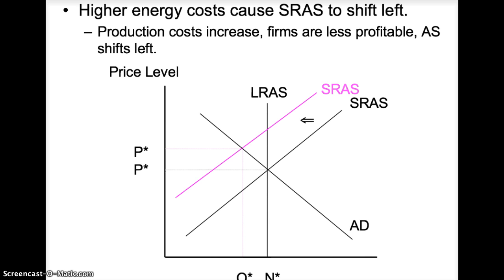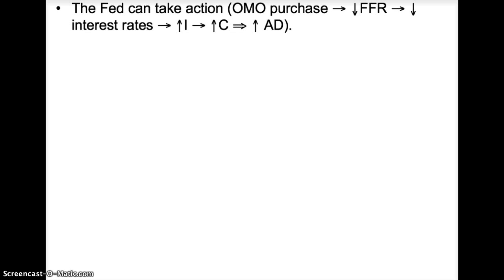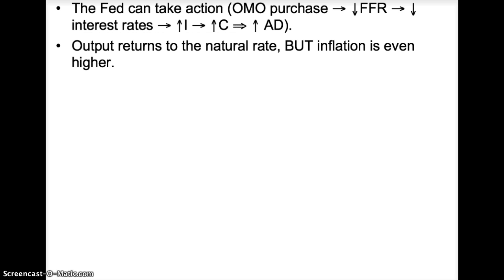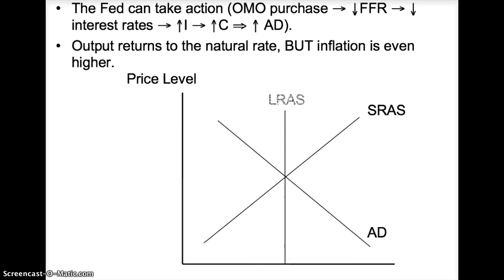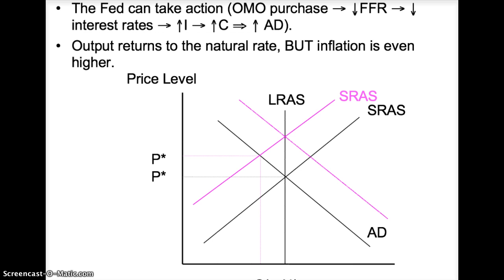The Fed can take action by conducting expansionary monetary policy. The Fed would conduct an open market operation purchase, decrease the federal funds rate, causing interest rates to fall, investment and consumption to increase, and the aggregate demand curve to shift right. Output would return to the natural rate, but inflation is even higher. On the diagram, as the AD curve shifts right, we return to a new full equilibrium showing that the price level has increased even more, but output has returned to the natural rate.